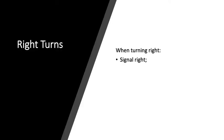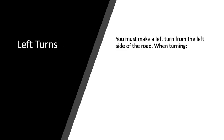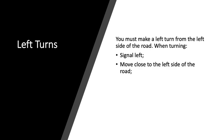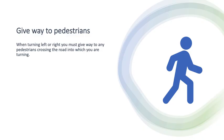Right turns. When turning right, signal right and move as close to the centre line as possible. Left turns. You must make a left turn from the left side of the road. When turning, signal left, move close to the left side of the road, and keep to the left side of the road you are entering.